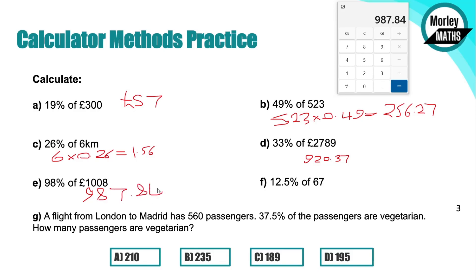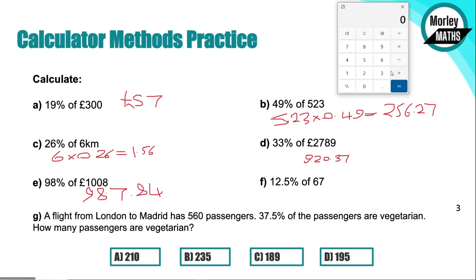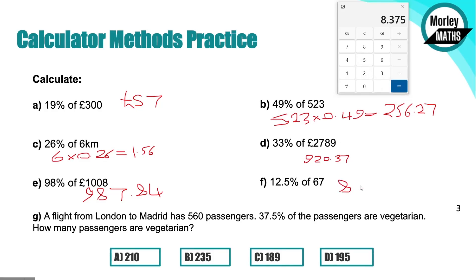Question F: 67 times—now this one's a little bit different because we've obviously got a decimal place within our percentage. We can get rid of that decimal point or just have it at the front. For this one, we would be using 0.125. So 67 times 0.125 gives us 8.375 as our answer.